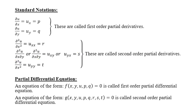An equation involving variables x, y, the function u, and only first order derivatives p and q is called a first order partial differential equation. Similarly, if the equation involves second order derivatives like r, s, and t as well, then it is called a second order partial differential equation.